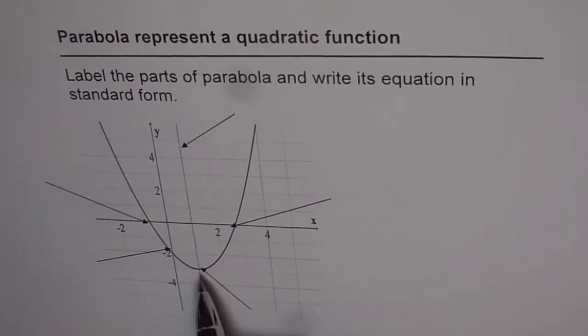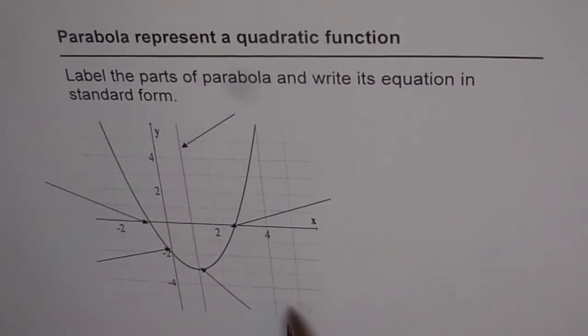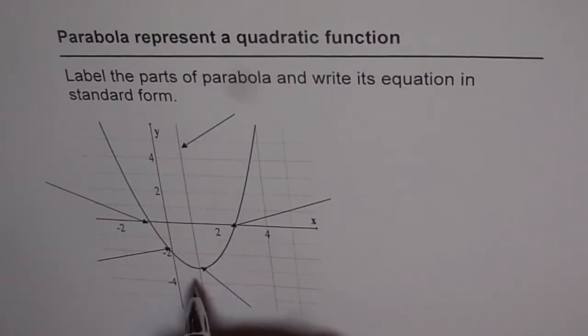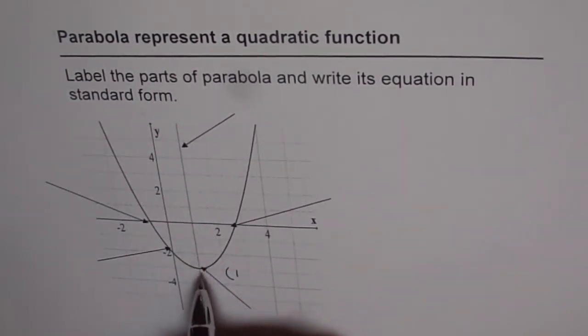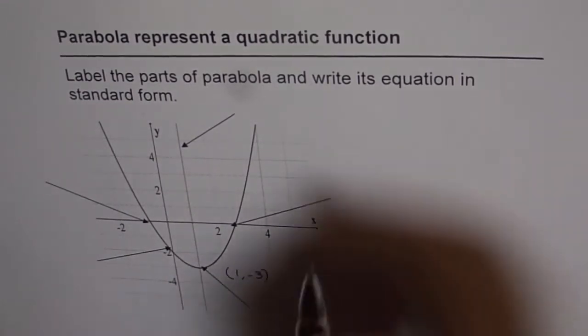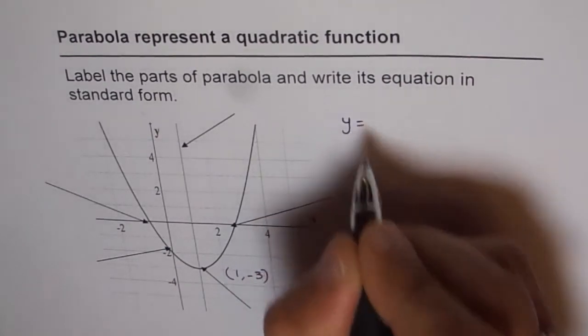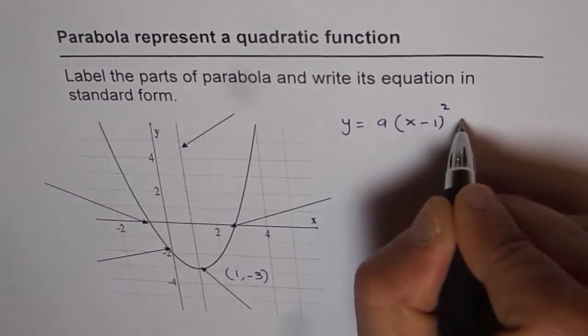Now this parabola opens upwards and writing a vertex form equation is very easy. So let's actually write down vertex form equation and then later we can write it in standard form. So we know what the vertex is. If you look at the graph, vertex is at the point which is 1 here and along the y-axis is minus 3. So vertex is at 1, minus 3. We can write y equals to a times x minus 1 whole square minus 3.